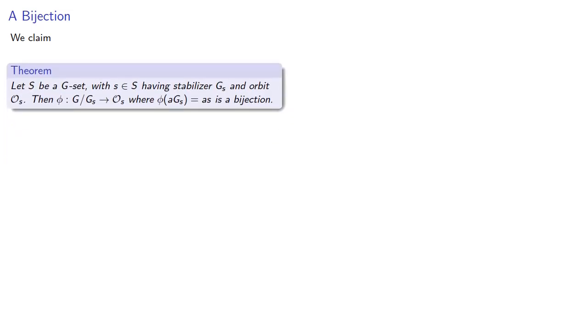And this leads to an important result. Let S be a G-set with some element s having stabilizer and orbit. Then this function we've defined from the cosets into the orbit is a bijection. Now the fact that this is onto should be obvious.